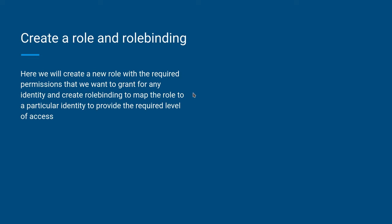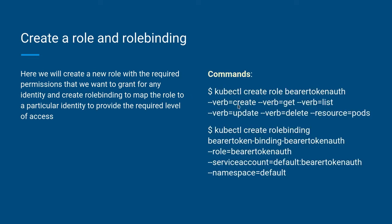The first command creates a role — bearer-token-auth — with verbs (actions) like create, get, list, update, and delete on the resource pod. Once this role is created, we create the role binding, which maps the bearer-token-auth role to the service account we created earlier. The role binding is specific to a namespace, so we apply it in the default namespace, since we created the service account within that default namespace.